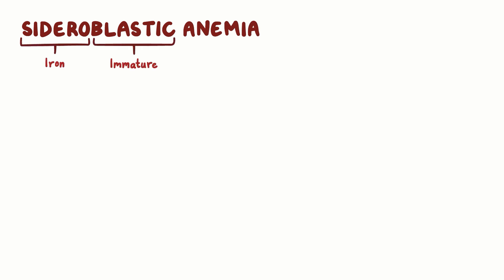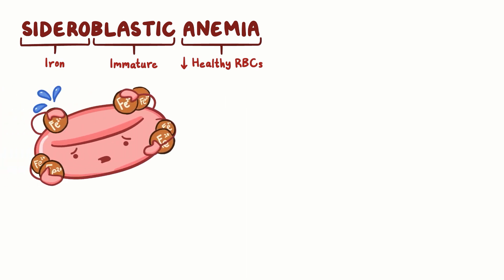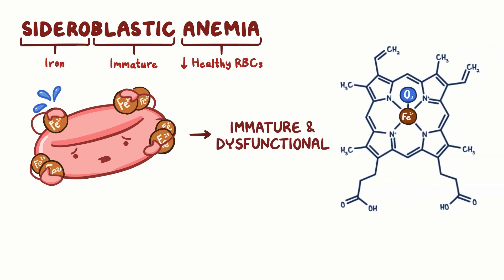With sideroblastic anemia, sidero means iron and blastic means immature, and anemia refers to a condition where there's a decrease in the number of healthy red blood cells, or RBCs, in the body. So sideroblastic anemia is a type of blood disorder where there's a buildup of iron in the RBCs, causing them to be immature and dysfunctional. This buildup occurs because these RBCs are unable to incorporate iron into hemoglobin, which is necessary for RBCs to transport oxygen.